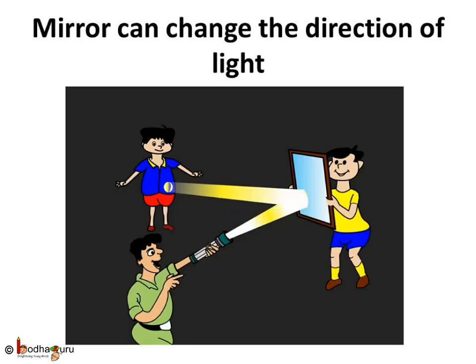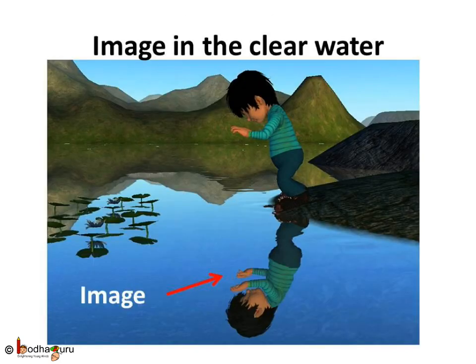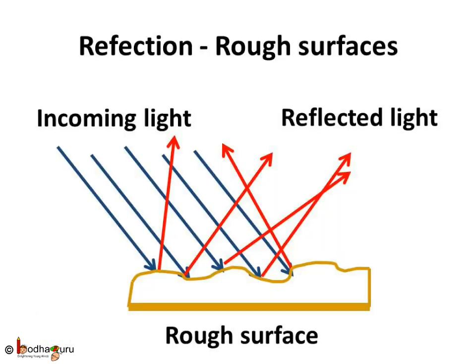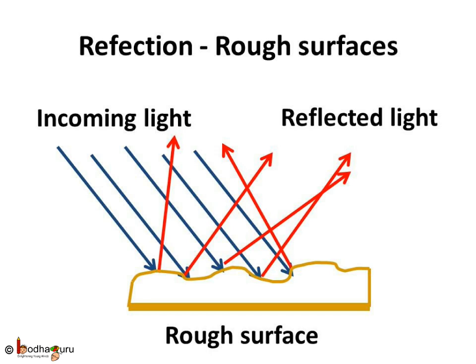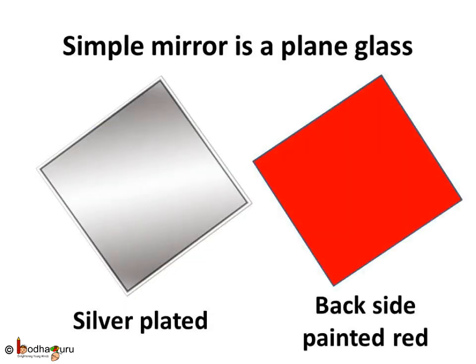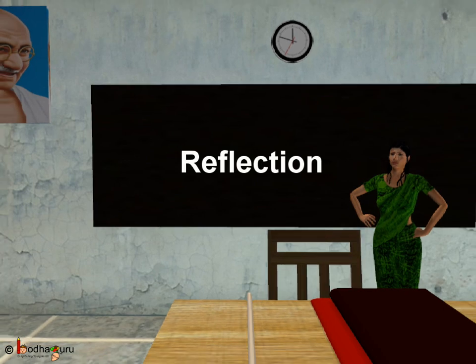To sum up, now we know how to change the direction of light and what reflection is. Light travels in a straight line, and the mirror changes the direction of light that falls on it — this change of direction is called reflection of light. Any polished or shiny surface, like water, can also act like a mirror and reflect to give clear images. When reflection is by rough surfaces, the images formed are not clear as light gets reflected in various directions. And lastly, a simple mirror is a plain glass which is silver plated to make it shiny.